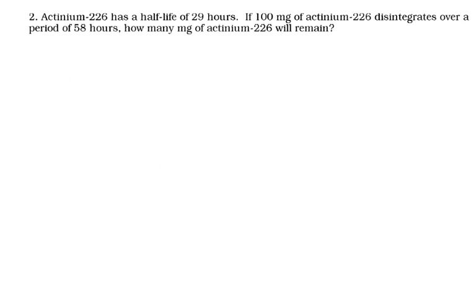Actinium-226 has a half-life of 29 hours. If 100 milligrams of actinium-226 disintegrates over a period of 58 hours, how many milligrams of actinium are you going to have? So firstly, again, how many half-lives are we talking about? Well, 58 divided by 29 is 2, so we've got two half-lives.